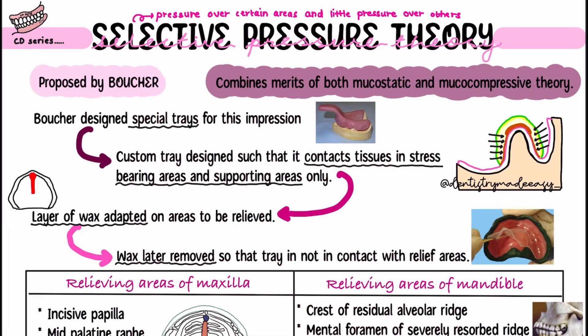Welcome back. Till now we have seen two main theories of impression making. Moving on towards the last major theory, which is the most commonly applied theory in impression making for complete denture. The theory we are going to see today is known as selective pressure theory — the name itself is self-explanatory — where in certain areas of mucosa we apply pressure and in certain areas we apply minimal pressure.